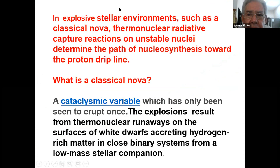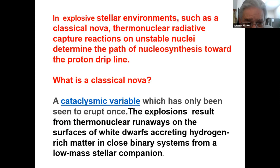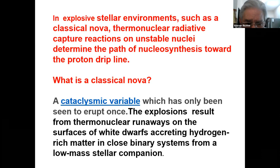So we're going to discuss mainly NOVAs. We know that on NOVAs basically — let's define a classical NOVA — a cataclysmic variable which is only seen to erupt once, although they can recur. Explosions are confirmed by nuclear runaways on the surface of white dwarfs accreting hydrogen-rich matter in close binary systems.